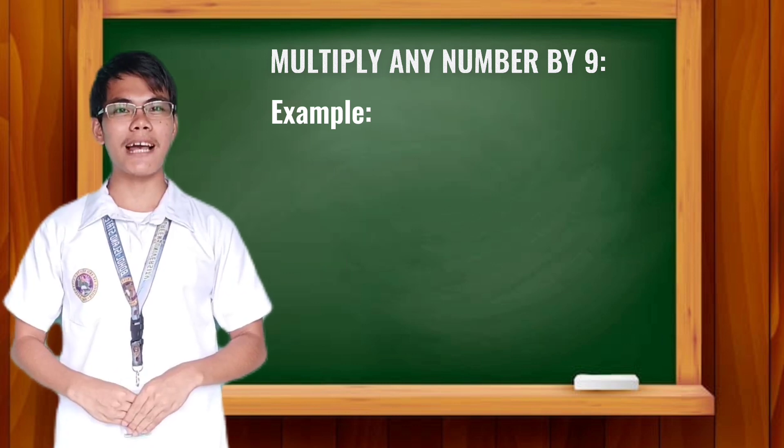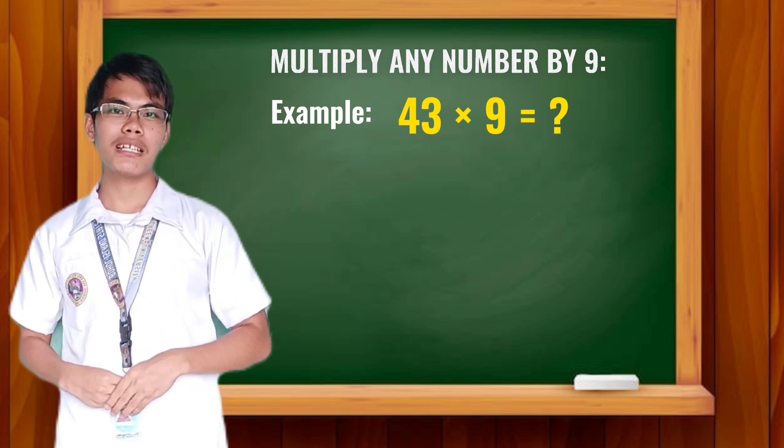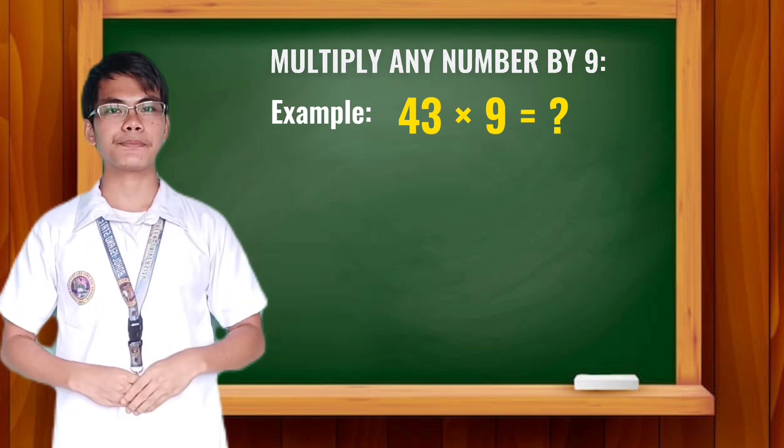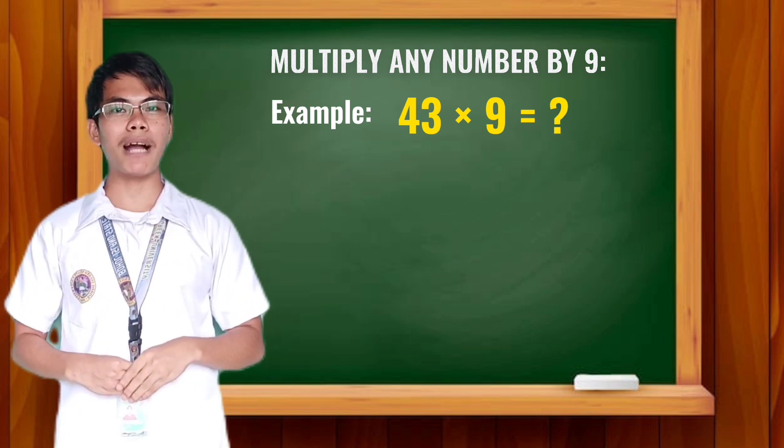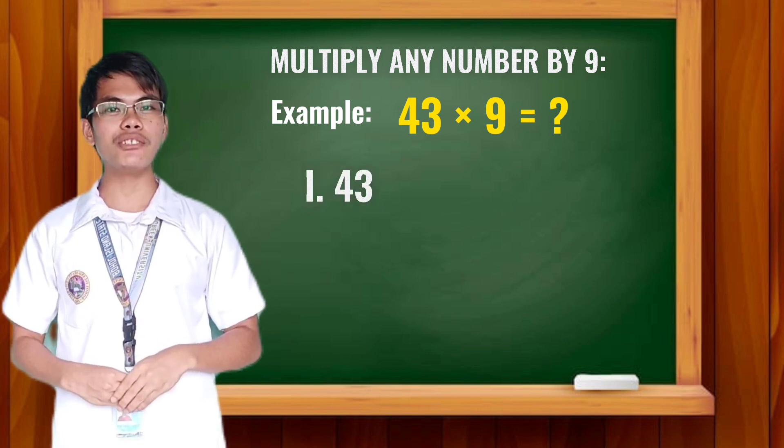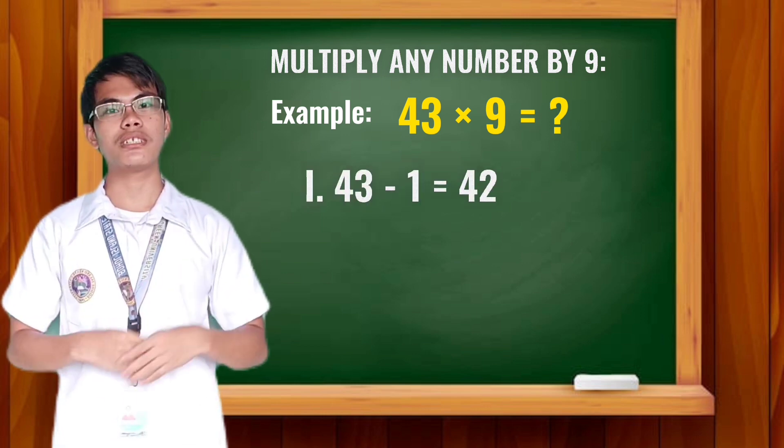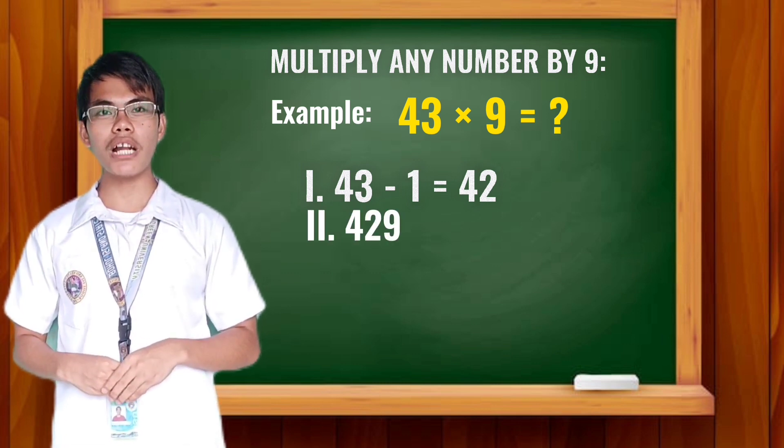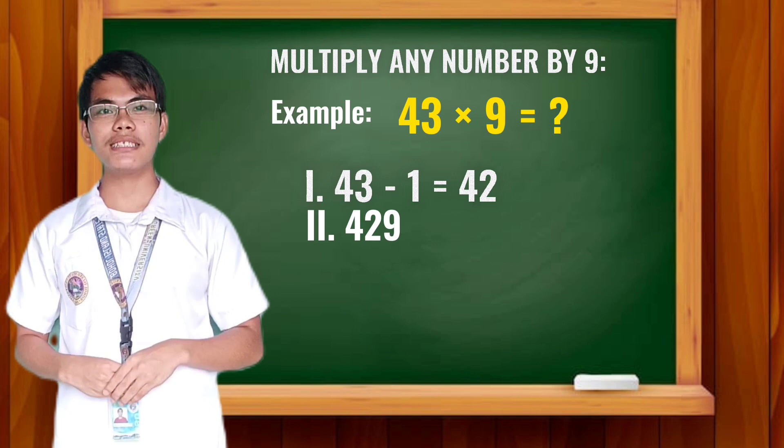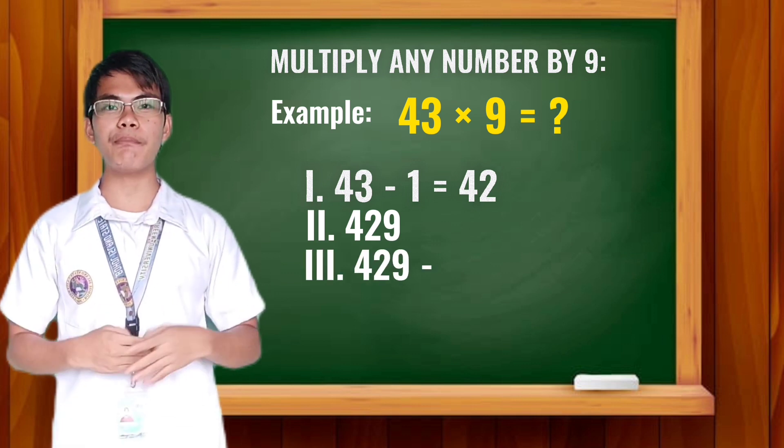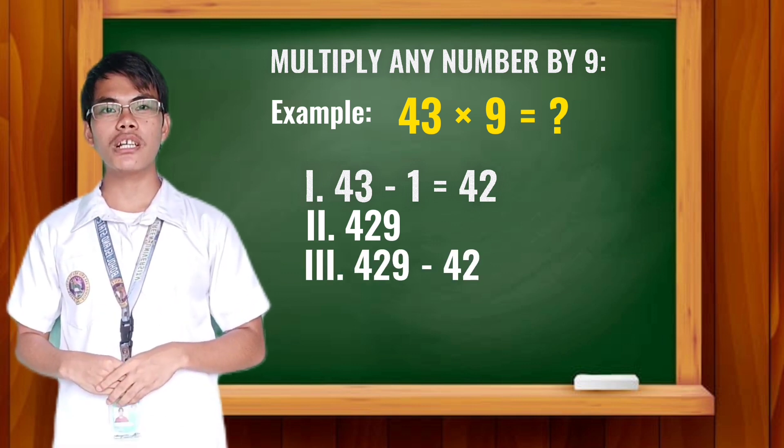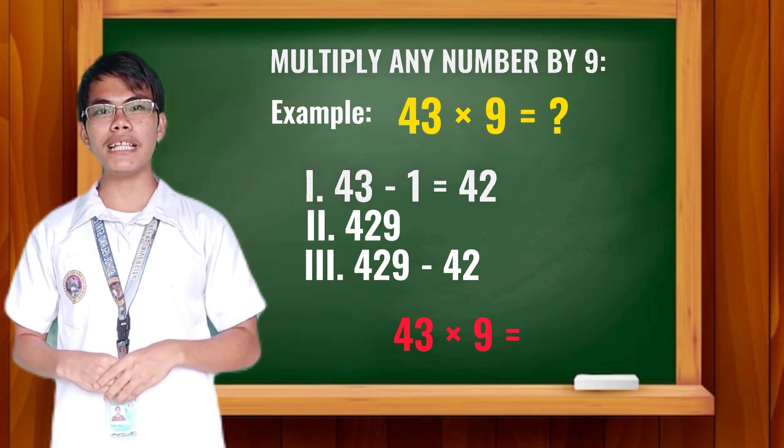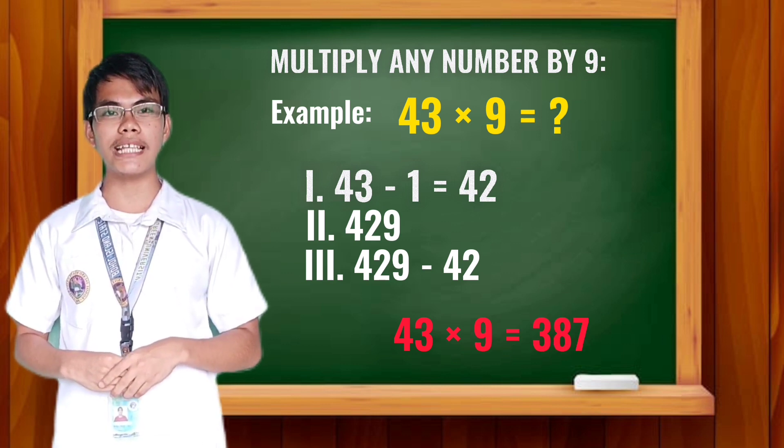Let's have another example. 43 times 9. First step: Subtract 43 by 1. 43 minus 1 is equal to 42. Next, copy 42 together with 9. It will be 429. Then subtract 429 by 42. Therefore, 43 multiplied by 9 is equal to 387.